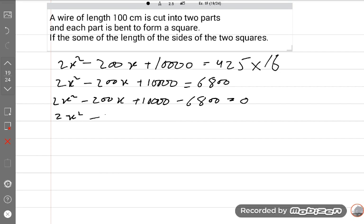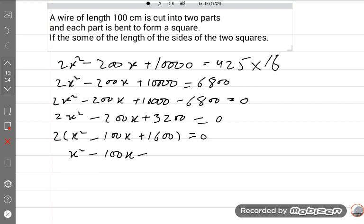2x squared minus 200x plus 3,200 equals 0. Two will be common, so x squared minus 100x plus 1,600 equals 0. I will use calculator to find out the values of x because there is x squared, so we will find two values of x.